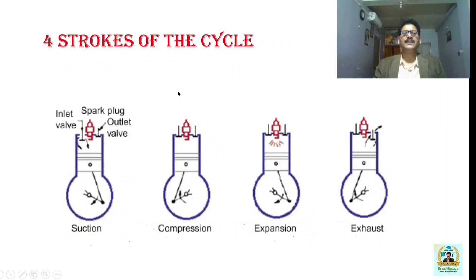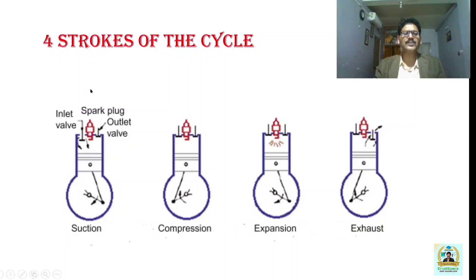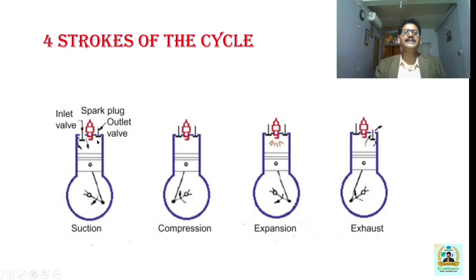Now we'll briefly discuss the operation of a four-stroke cycle engine for comparison. The four operations are suction, compression, expansion, and exhaust. In the suction stroke, the piston moves from TDC to BDC, the inlet valve opens, and as the volume increases pressure drops, drawing the air-fuel mixture prepared in the carburetor into the engine cylinder through the inlet valve. The process completes once the piston reaches BDC.